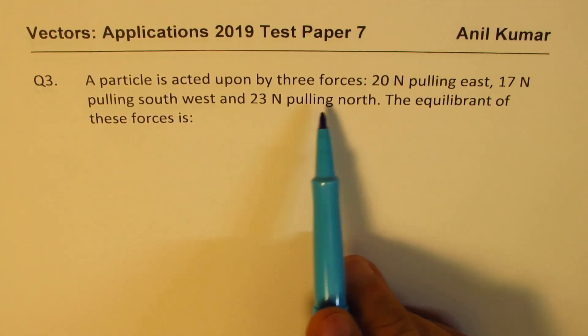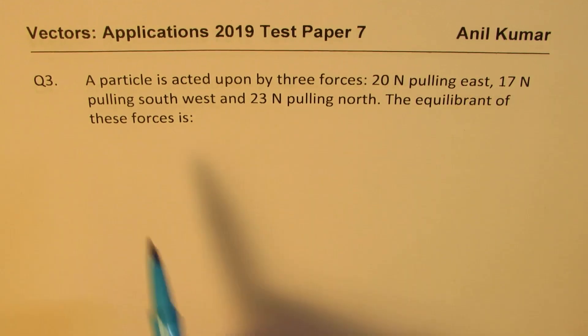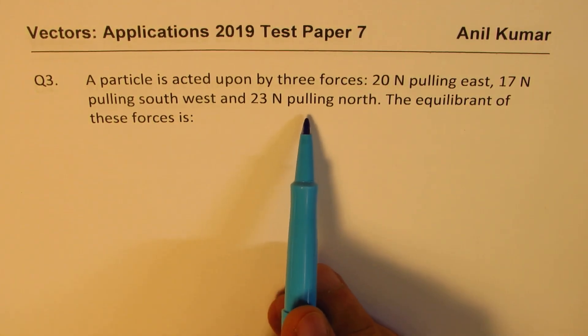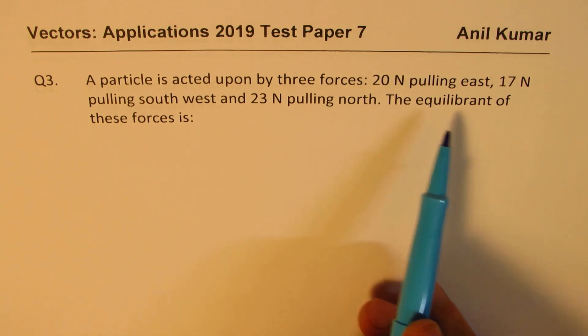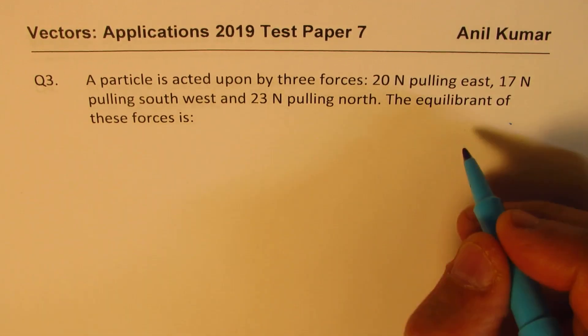A particle is acted upon by three forces: 20 Newtons pulling east, 17 Newtons pulling southwest, and 23 Newtons pulling north. The equilibrant of these forces is what? That is what you need to figure out.